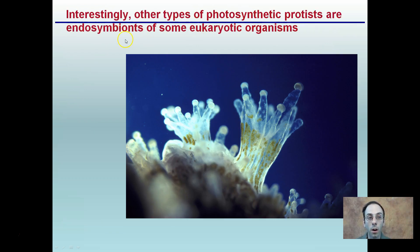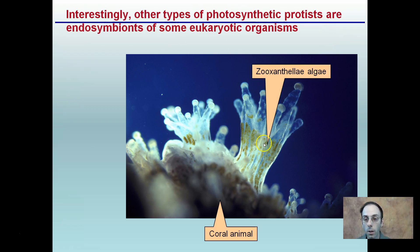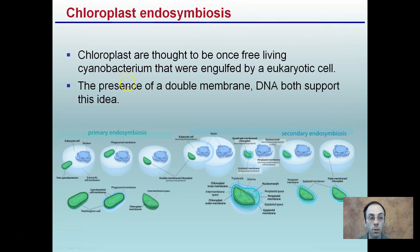Other types of photosynthetic protists are endosomatic of some eukaryotic organisms. A prime example is coral, which is an animal, and if you look inside this animal, there is algae living inside it. This is another example of endosymbiosis — the algae captures sunlight and produces sugar, while the animal provides protection. Chloroplasts are thought to have once been free-living cyanobacteria engulfed by a eukaryotic cell; the presence of a double membrane and DNA both support this idea.